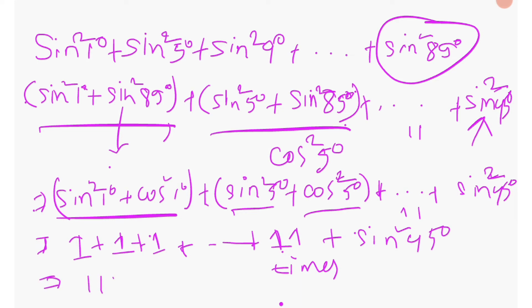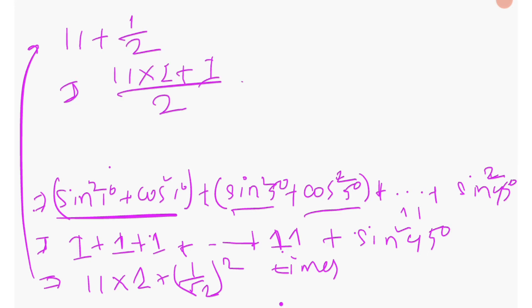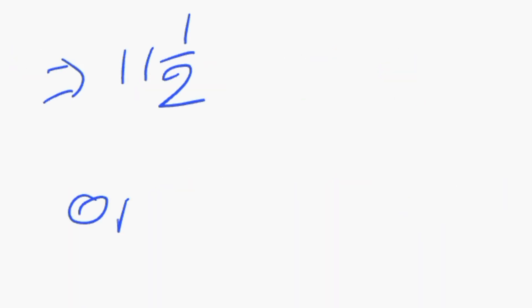The next line is 11 times 1, since there are 11 pairs each equal to 1. Since sin 45 degree equals 1 over root 2, sin square 45 degree equals 1 by 2. So we get 11 plus 1/2, which equals 22/2 plus 1/2, giving 23 by 2, that is 11 and a half. This confirms the correct answer.